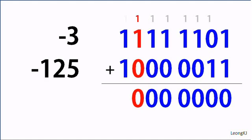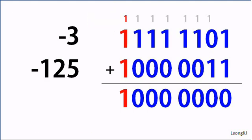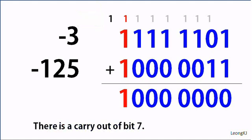The addition of bit 6 results in a carry. The addition of bit 7 also results in a carry. Since both bit 6 and bit 7 produce a carry, the OV flag is therefore cleared to 0.